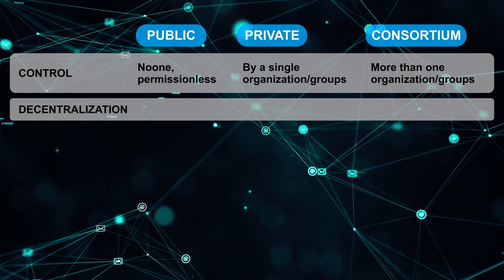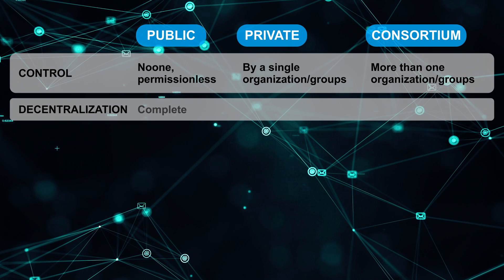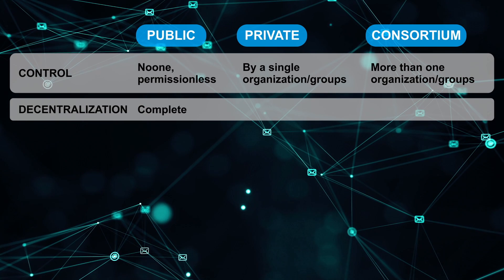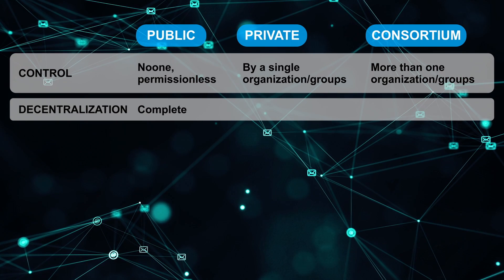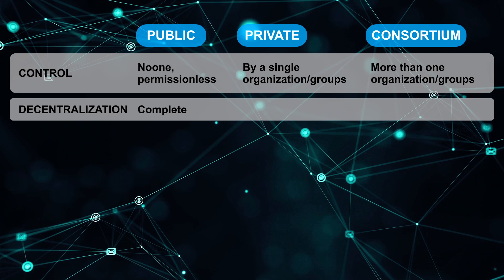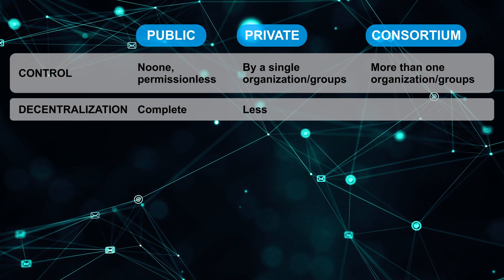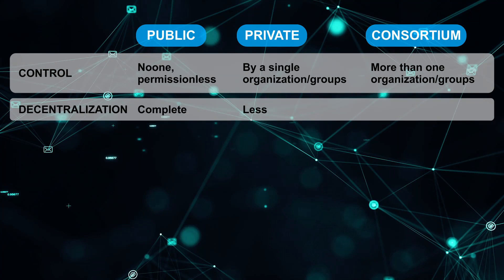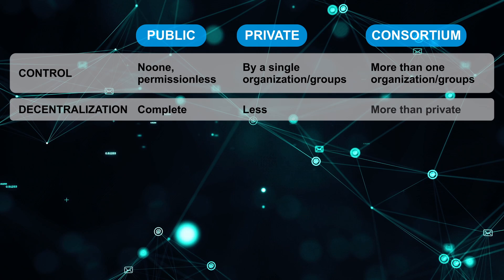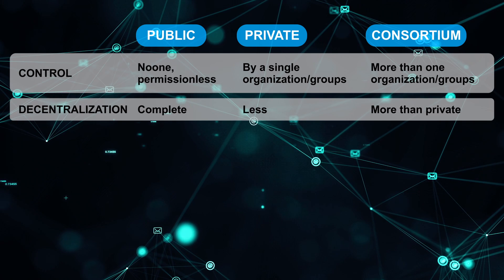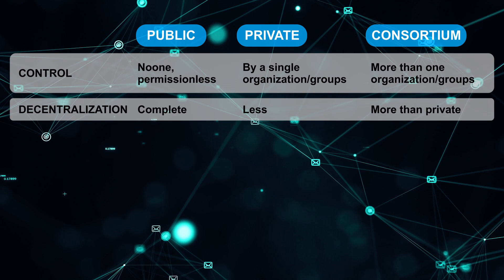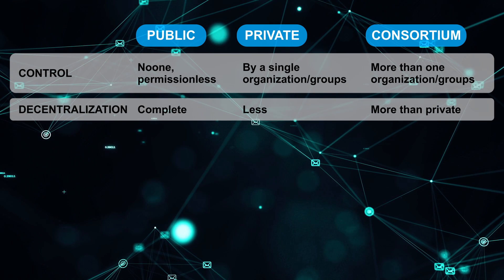Since we have talked about the control factor, public blockchains are completely decentralized as they are controlled by no one. Whereas private blockchains are less decentralized, and consortium blockchains are somewhat more decentralized than private blockchain, but still some centralization exists.